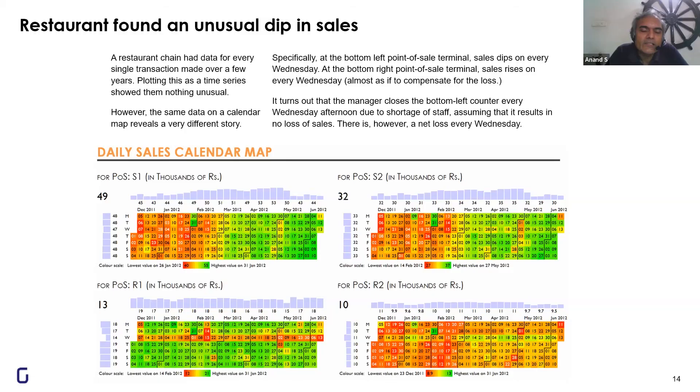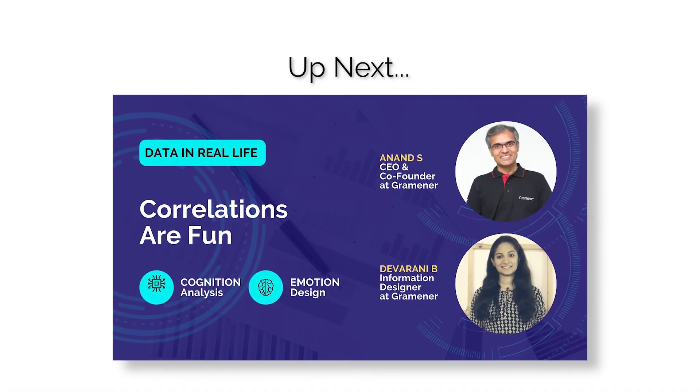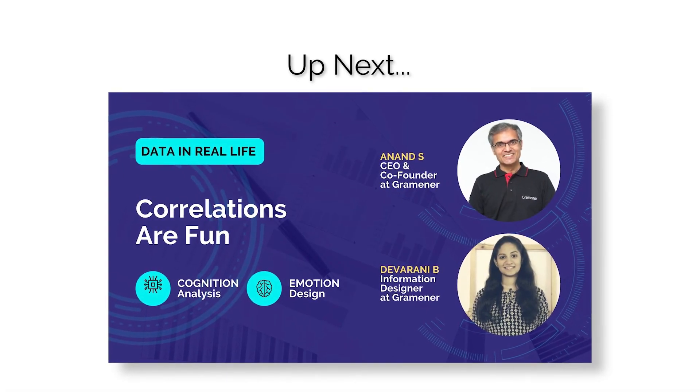Sometimes data can tell people things that even when they are looking at it face to face, day in and day out, they don't make sense of it. These were examples of simply using pivot tables and heat maps with colors to see something that is not obvious.